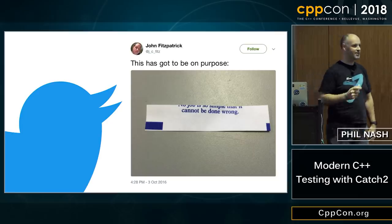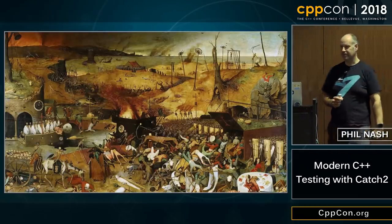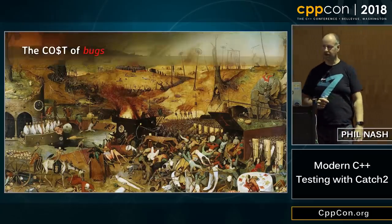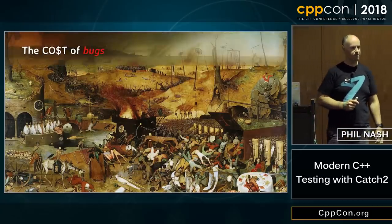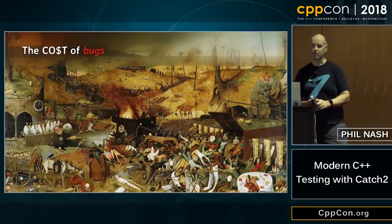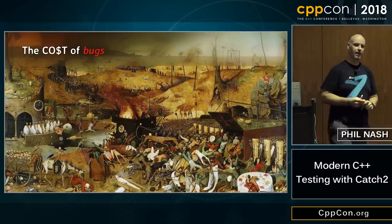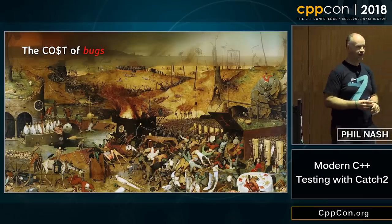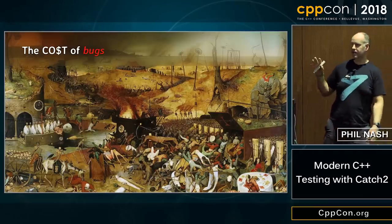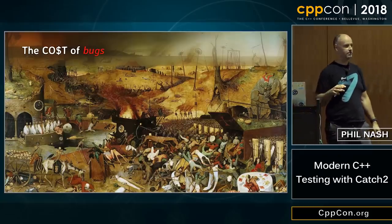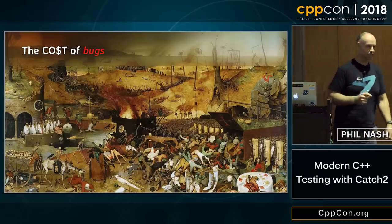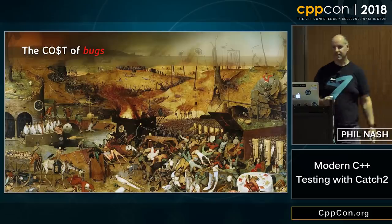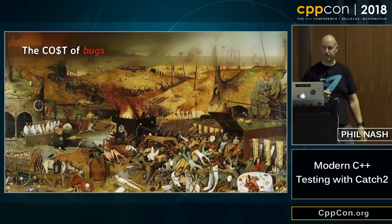Let's get started with something a bit more serious. I just want to talk for a moment about the cost of bugs. Bugs are not the only reason that we do unit testing, but they're definitely a big part of it. We want to get a low defect rate in our code — who here doesn't want to lower the defect rate? We all do. Testing is a big part of that, and it's nice to put some numbers to it.